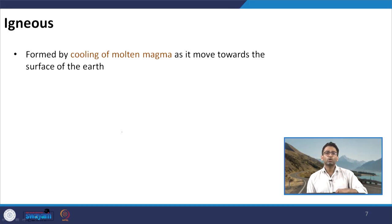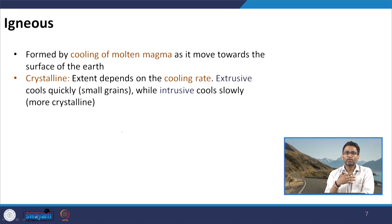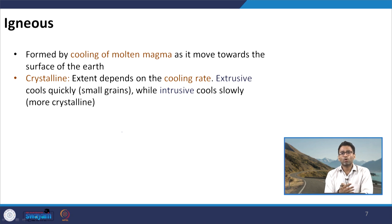Now let us start discussing each of these types of rocks. We will see which are the common types used for construction of pavements and which types are generally not preferred. Talking about igneous rocks, they are formed by cooling of molten magma as it moves towards the surface of the earth. Igneous rocks are crystalline in nature, but the extent of crystals depends on the cooling rate — how fast the magma is cooling.